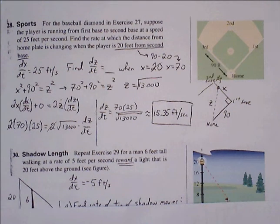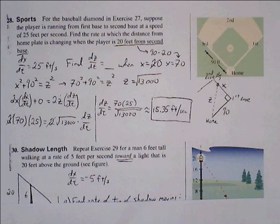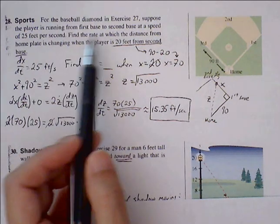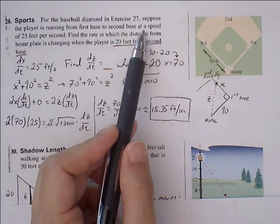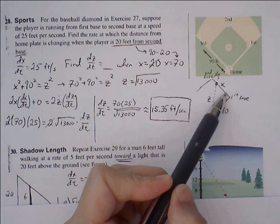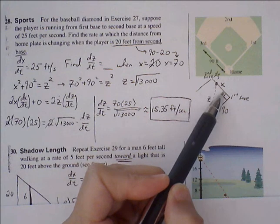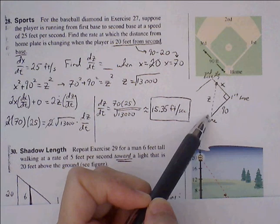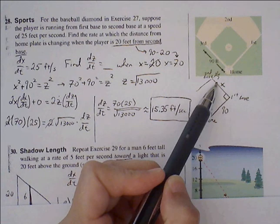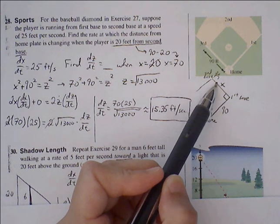Let's continue to look at some selected homework problems from related rates. Problem 2.6 #28 is another Pythagorean theorem problem. A player is running from first base to second base at a speed of 25 feet per second. Here's the base runner's path. We need to find the rate at which the distance from home plate is changing when the player is 20 feet from second base.